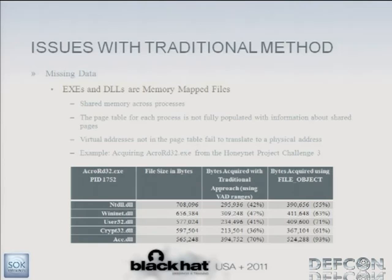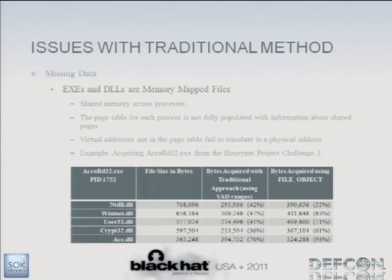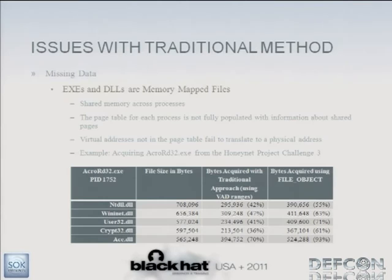This design goes back to Windows 16-bit when there wasn't much memory, and it's still more efficient today. Memory mapped files are shared across all processes even if used only once. Because of this, they may be in your process address space, but the address they represent may not translate in your page table entries. When you go to read the page table entry to find the physical page location, it's all zeros — meaning that region had to be ignored because we couldn't access it.